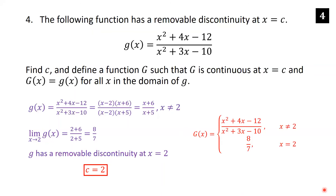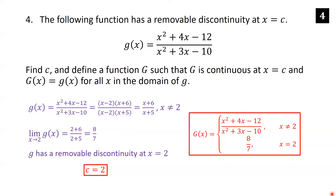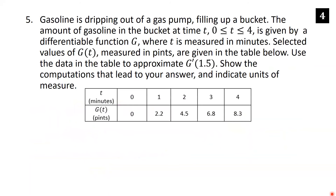For the second part, define the function G(x) equal to g(x) for x ≠ 2, and equal to the limiting value 8/7 when x = 2. This makes G continuous at x = 2 while agreeing with g on its entire domain.